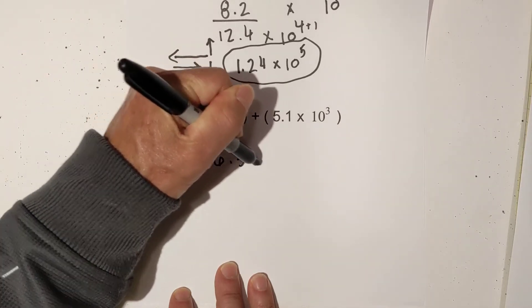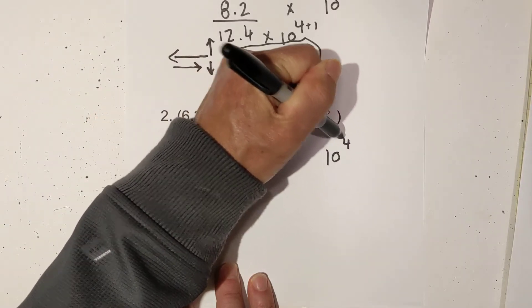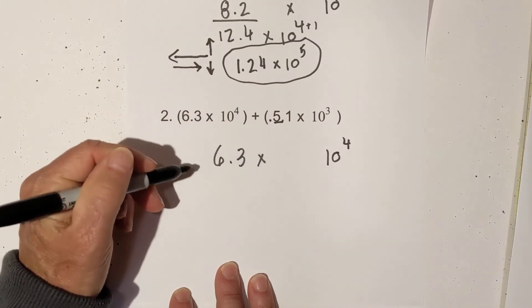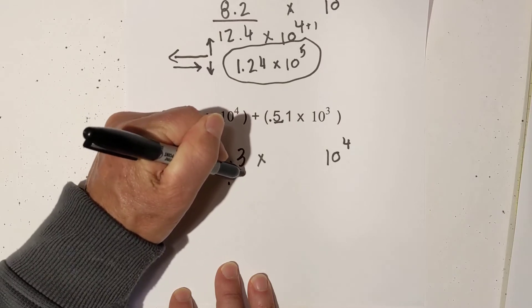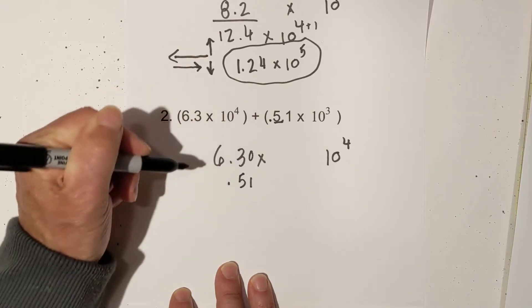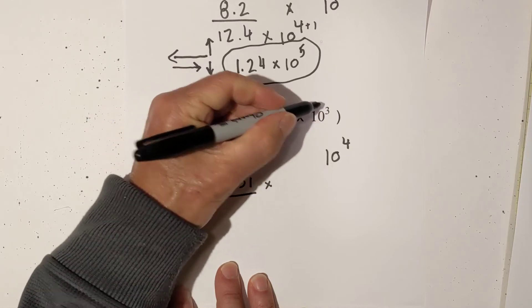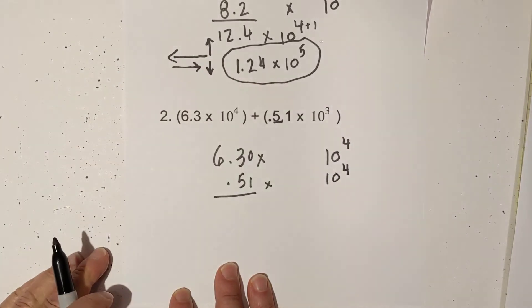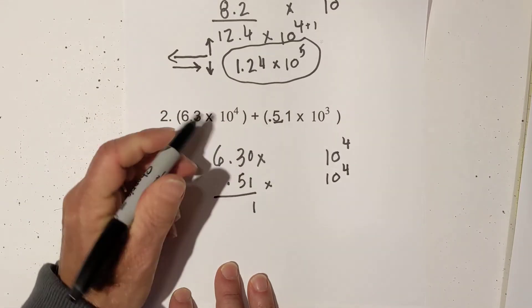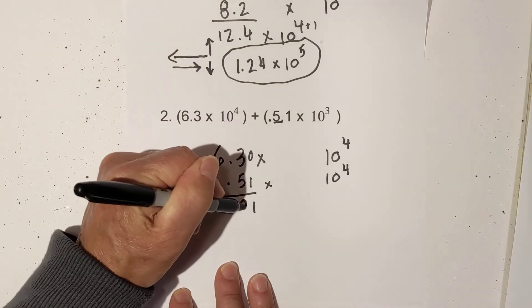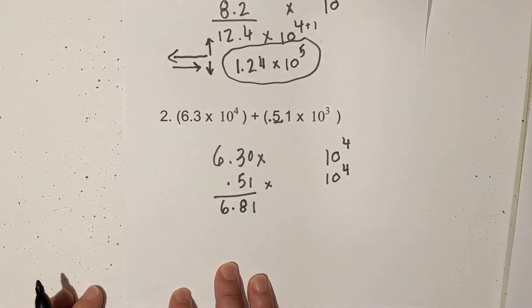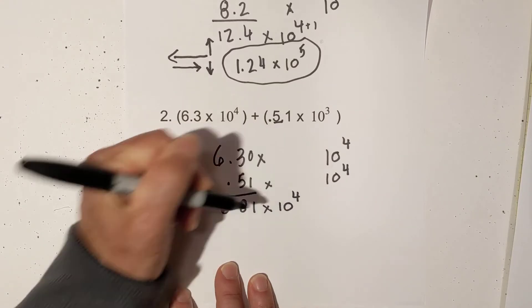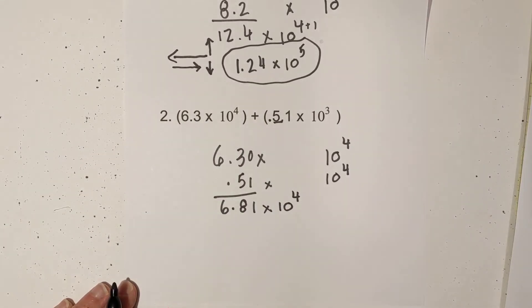So I'm going to write 6.3 times 10 to the fourth, and then I'm going to move the decimal place one to the left, which means it's going to get smaller. So that's 0.51. And that means I'm going to add 1 to 10 to the third. So that becomes 10 to the fourth. And now I just add them. That becomes 6.81. The first number is between 0 and 10, so I can keep it 10 to the fourth.